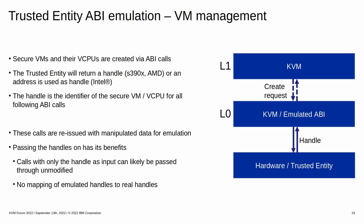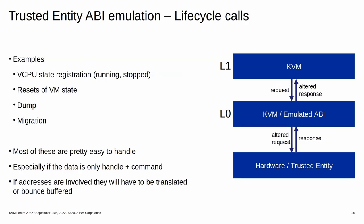As level 0 KVM manages all secure resources, the create request is heavily modified to suit level 0's point of view before being reissued to the real trusted entity. If the response secure entity handle is a simple ID, it can be passed through to level 1, which allows ABI calls consisting of an action plus a handle to be passed through, and means level 0 doesn't need to map real handles to emulated handles. The lifecycle calls are generally the simplest ABI calls to emulate — to mark a vCPU as being in the stopped state, we only need its handle and the expected state, and such a call can be passed through to the real trusted entity without manipulation. Data requests like dumping are a bit harder, requiring address translation and data bouncing to work properly.